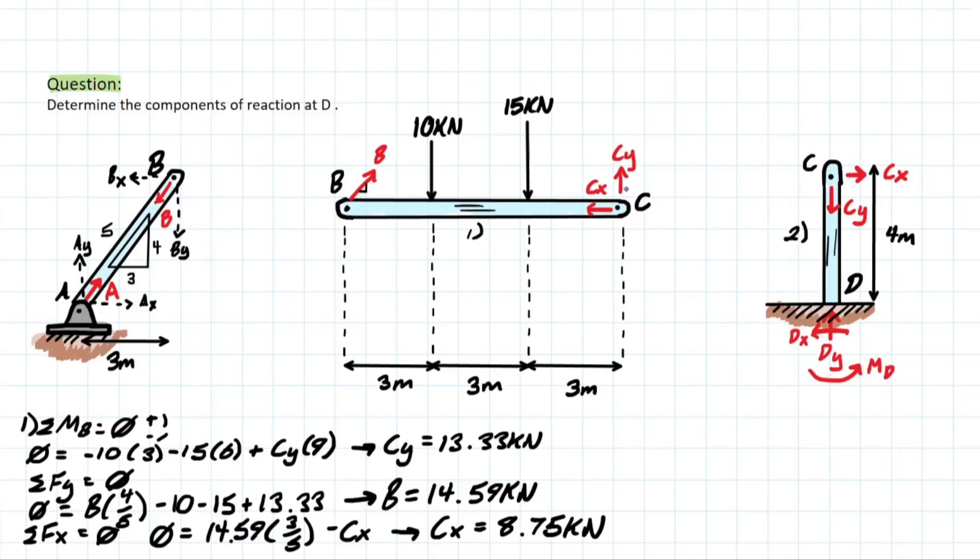So now we can go ahead with solving for member 2. Why? Because the C-X and the C-Y are transferred over by this pin to member 2 in equal and opposite direction. And it's simply an equilibrium of rigid body problem. But it looks a little different because it's 90 degrees tilted from what we're used to seeing.